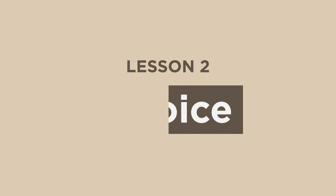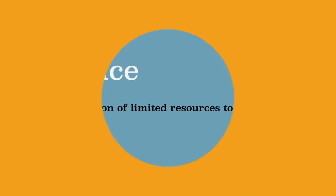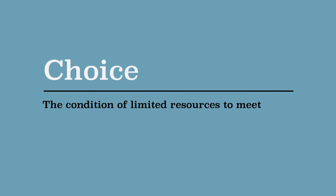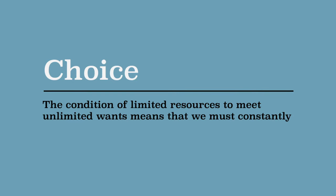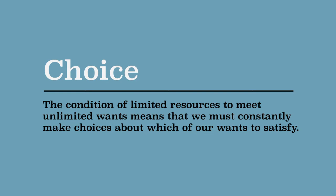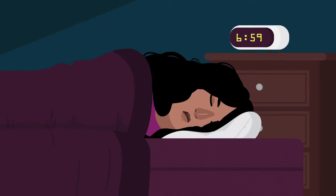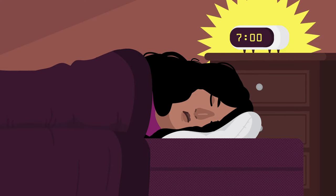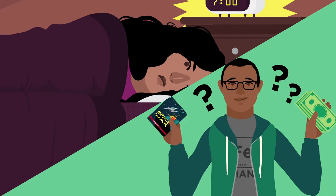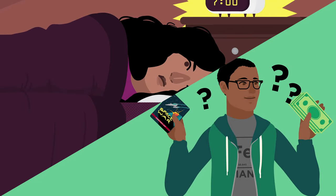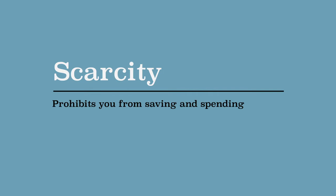Lesson 2: Choice. This condition of limited resources to meet unlimited wants means that we must constantly make choices about which of our wants to satisfy. For example, because time is scarce, you must choose whether you will sleep in the morning or go to school. You must choose whether to spend or save your allowance. Scarcity prohibits you from saving and spending the same dollar. You must choose.